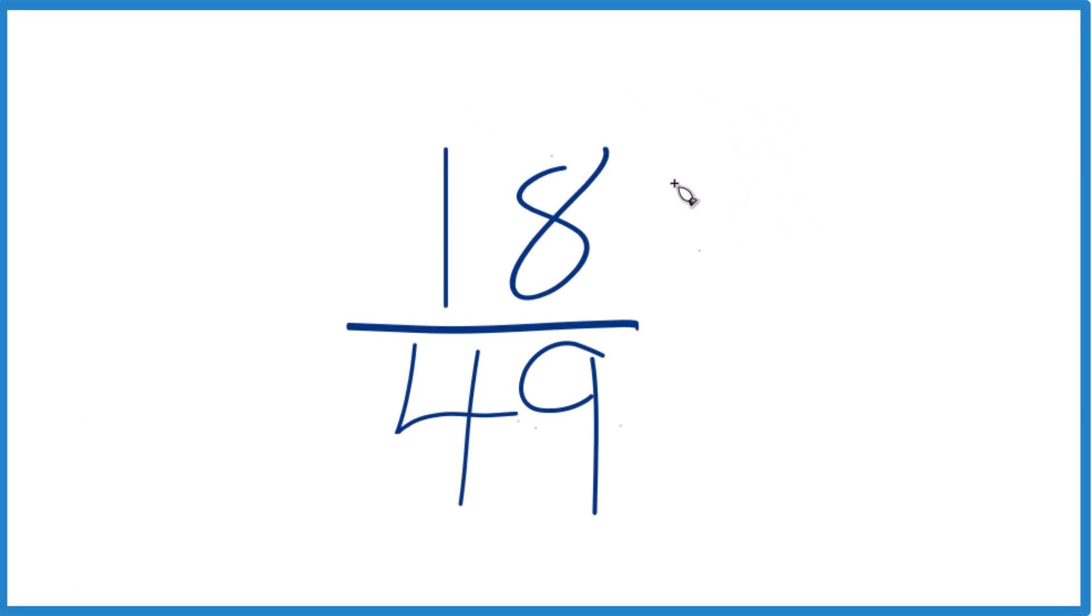In this video, we're going to simplify this fraction 18/49, so 18 over 49, and we want to get this down to lowest terms, reduce it down to lowest terms.